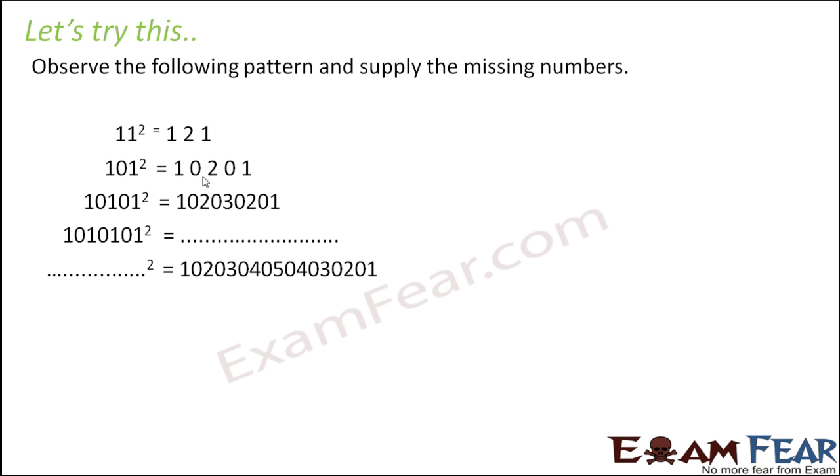Earlier it was 1, 2, 1. Then 20 was introduced in between. Then in the third step, 30 was introduced in between. So what will happen in the fourth step? In the fourth step, 40 will get introduced in between. On the left hand side you would have 10, 20, 30. And on the right hand side, 30, 21.